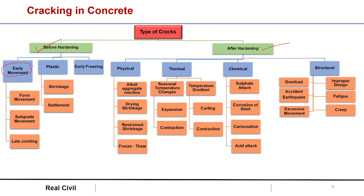Cracks caused by early movement — first is formwork. Suppose formwork moves; because of that a crack may occur very early in the concrete, as soon as we have cast or constructed the concrete. Second is subgrade movement: suppose there is a subgrade and above that we are pouring our concrete, and this subgrade moves, then there may be cracks in the concrete.